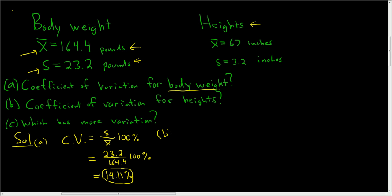B, we'll do the same thing, but now we'll do it for the heights. So CV equals the standard deviation divided by the mean, and then we multiply by 100 and attach the percent sign. So here it'll be 3.2, that's our S. Then you divide by X bar, so divide by 67, and then just multiply by 100 and attach the percent sign. So this is equal to, using a calculator, 4.78%.